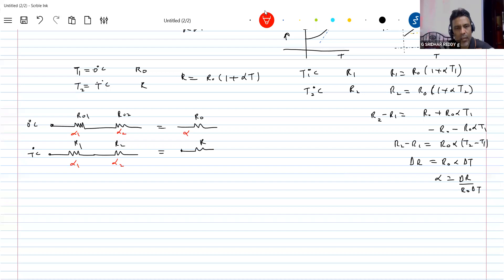So what is that effective alpha of the material? I want an expression for alpha in terms of R01, R02, alpha 1, alpha 2, and any other like changing temperature. How to calculate effective alpha?